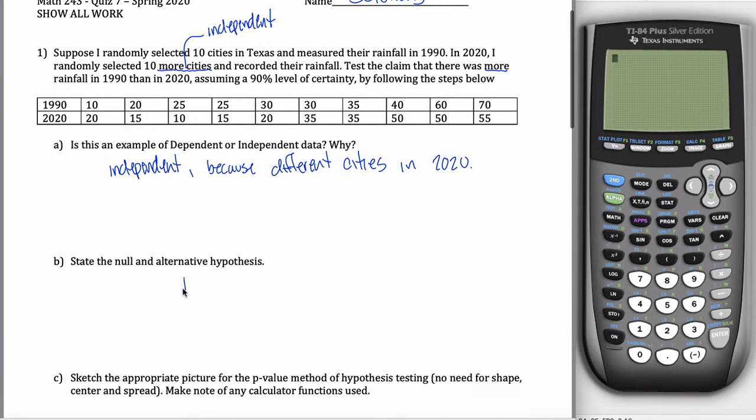State the null and alternative hypotheses. Well, my null hypothesis, maybe I'll start with my alternative hypothesis. My alternative hypothesis is that mu of 1990 is, what did I say? Test the claim there was more rainfall in 1990. So greater than mu of 2020. My null hypothesis was, nah, that wasn't more rainfall in 1990. The mus are the same. Mu of 1990 equals mu of 2020.